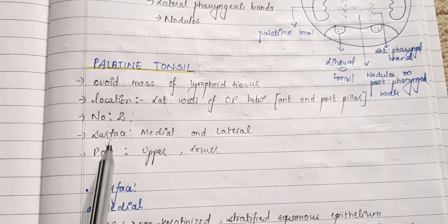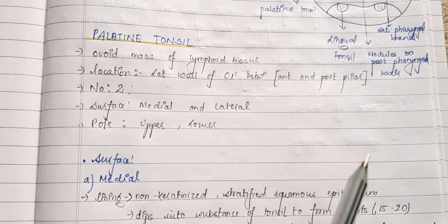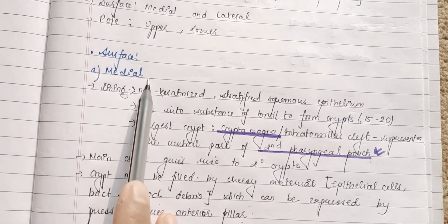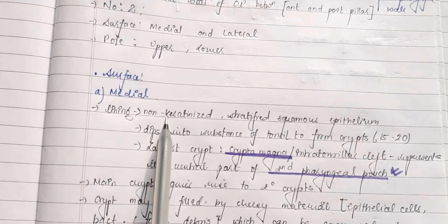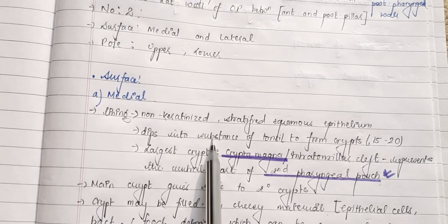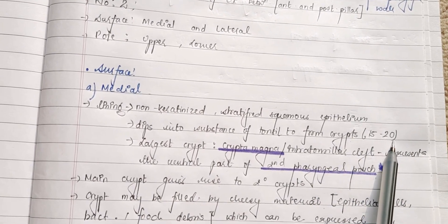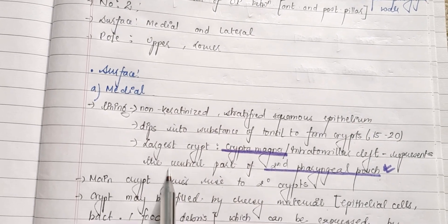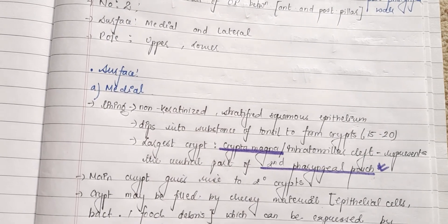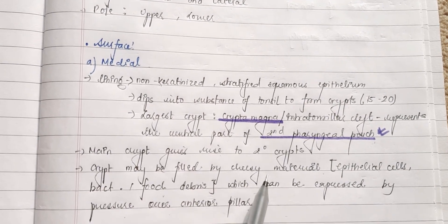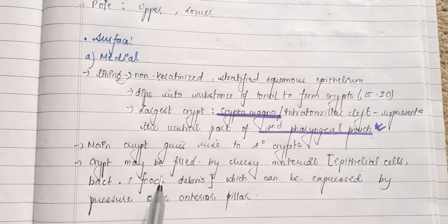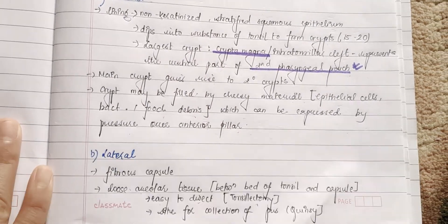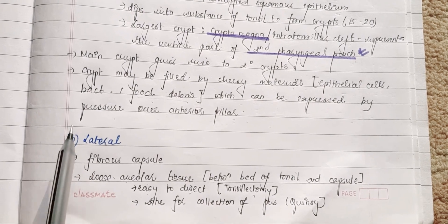The tonsil has a medial surface, a lateral surface, and upper and lower poles. The medial surface is lined by non-keratinized stratified squamous epithelium, which dips into the substance of the tonsil to form crypts — usually 15 to 20 in number. There is also a large crypt known as the crypt magna or intratonsillar cleft, representing the ventral part of the second pharyngeal pouch. The crypts give rise to secondary crypts and may be filled with caseous material consisting of epithelial cells, bacteria, and food debris, expressible by pressure over the anterior pillar, typically seen in chronic tonsillitis.